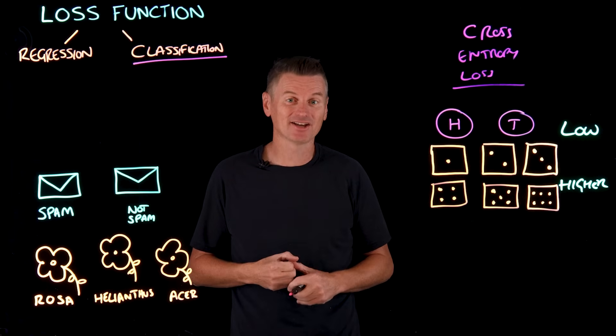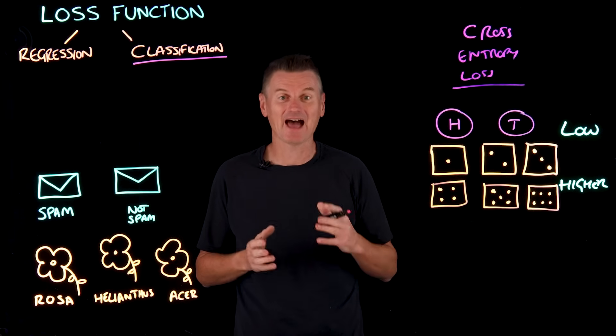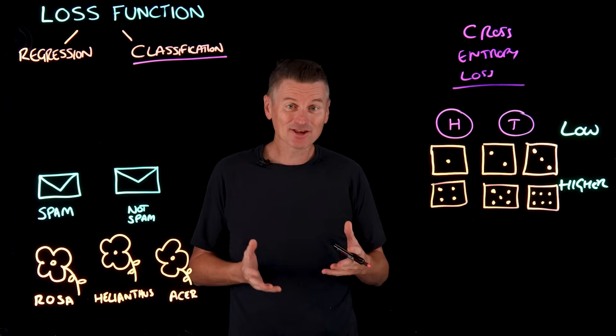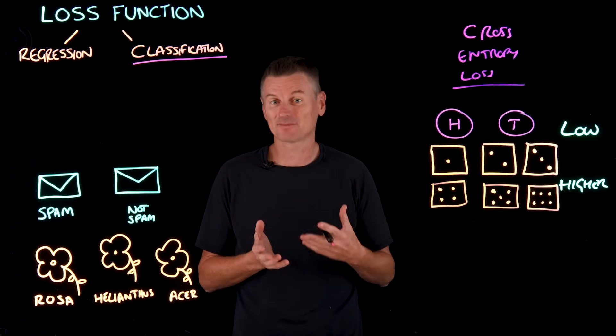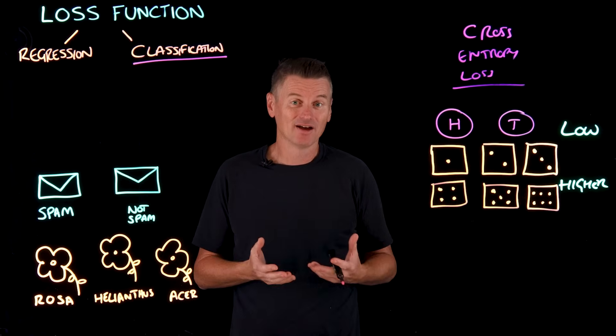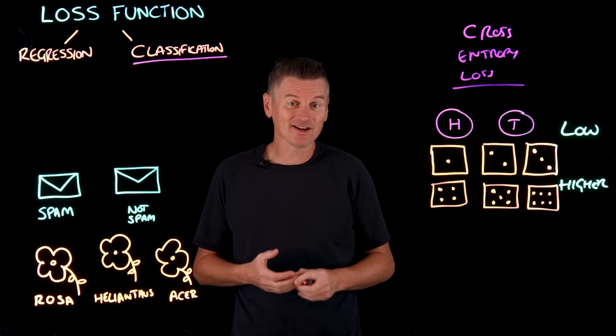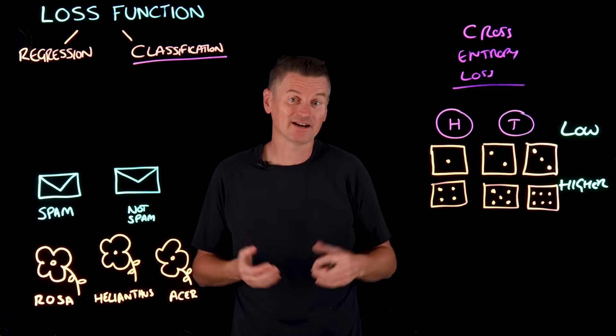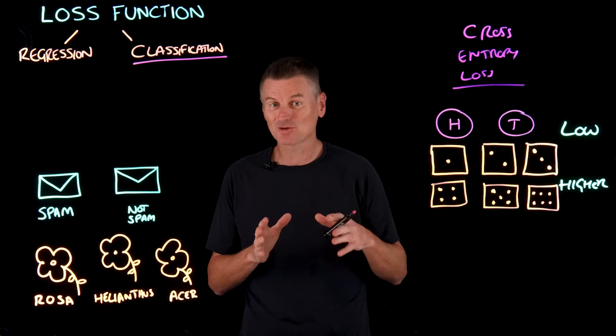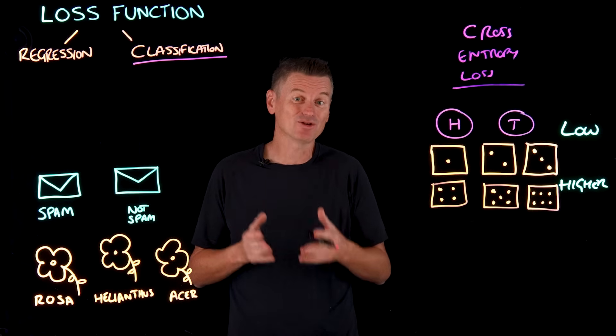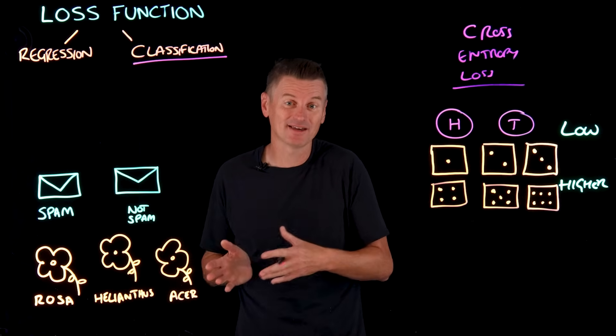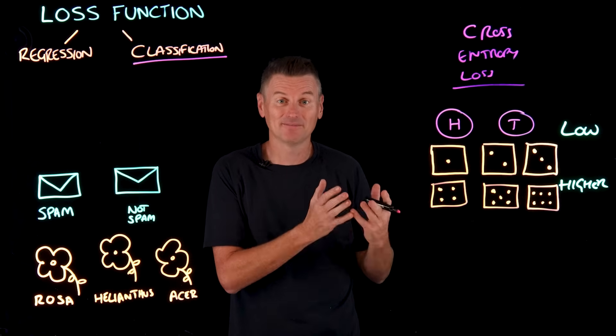Cross entropy loss measures how uncertain the model's predictions are compared to the actual outcomes. In supervised learning, model predictions are compared to the ground truth classifications provided by data tables. Those ground truth labels are certain and so they have low or in fact no entropy. As such, we can measure the loss in terms of the difference in certainty we'd have using the ground truth labels to the certainty of the labels predicted by the model.